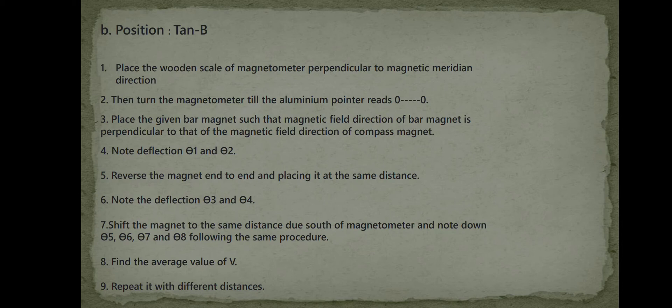Place the given bar magnet such that the magnetic field direction of the bar magnet is perpendicular to that of the magnetic field direction of the compass magnet. Note deflection theta 1 and theta 2. Reverse the magnet end to end and place it at the same distance. Note the deflection theta 3 and theta 4.